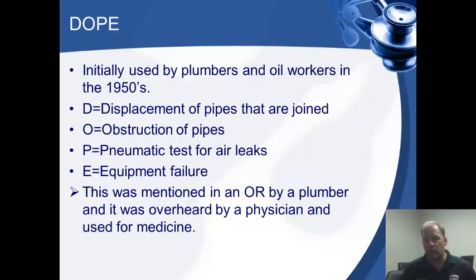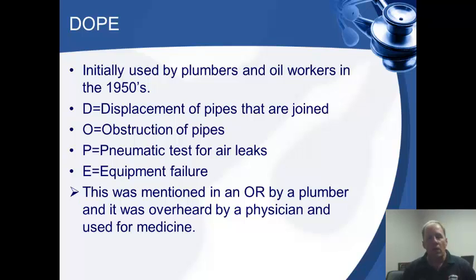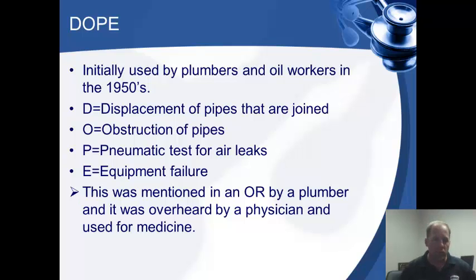P stands for pneumatic test for air leaks — we've got to make sure our cuff stays inflated or we'll get low pressure alarms, and make sure our patient doesn't have a pneumothorax. E is equipment failure — a dead battery or a catastrophic change in how the ventilator is functioning. Take it off, get a BVM. That's a good way to go back to something reliable until you can figure out what's going on.